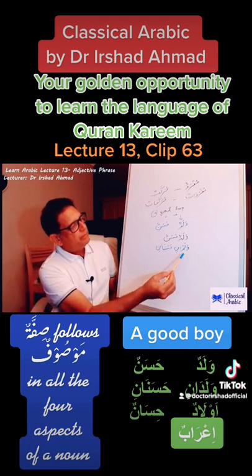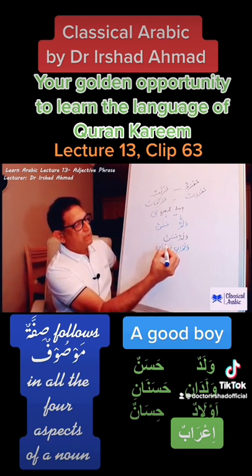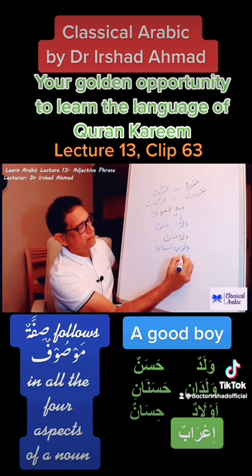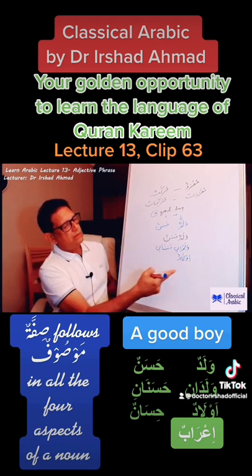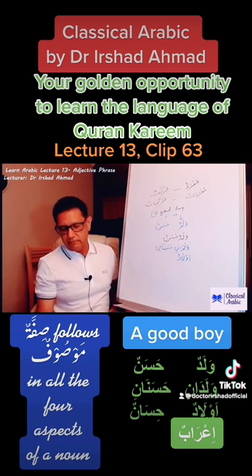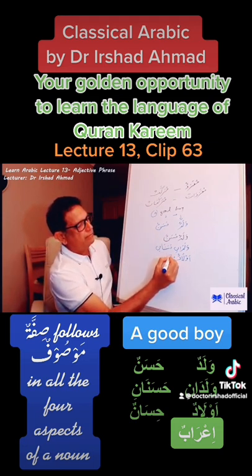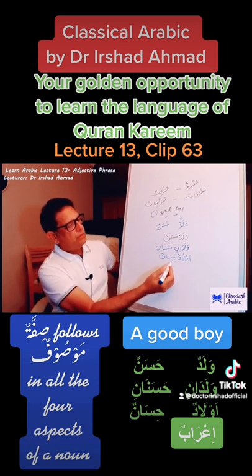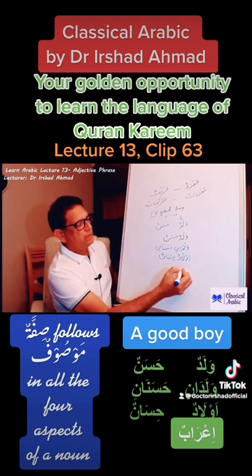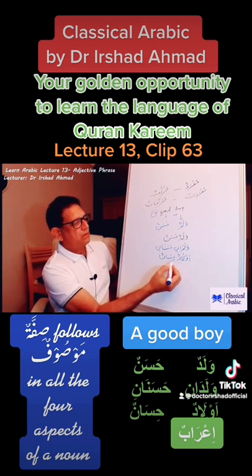Let us make this plural. The plural of Waladun is Jama Muqassar which is Awladun. Now the Masoof has become plural, so Sifa will have to follow. The plural of Hasanun is also Jama Muqassar which is Hisanun. So Awladun Hisanun means some good boys.